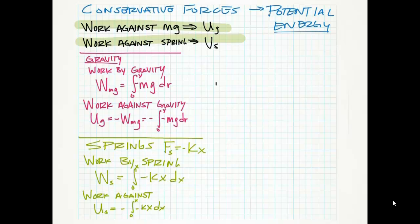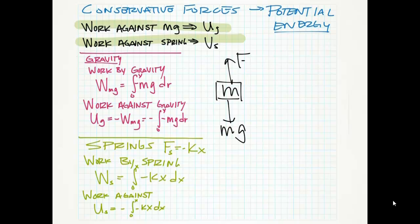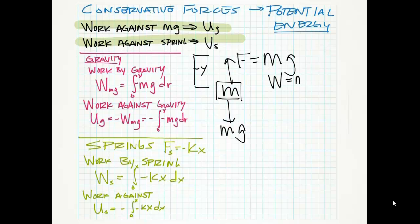If we look at an object of mass m, we know that weight pulls down onto the object and I'm going to lift up with a constant velocity. That force is going to be equal to the weight acting on the object. We're going to lift it up some y distance. As we do that, I do positive work. My work is equal to m, g, y. The work done by gravity is equal to negative m, g, y.